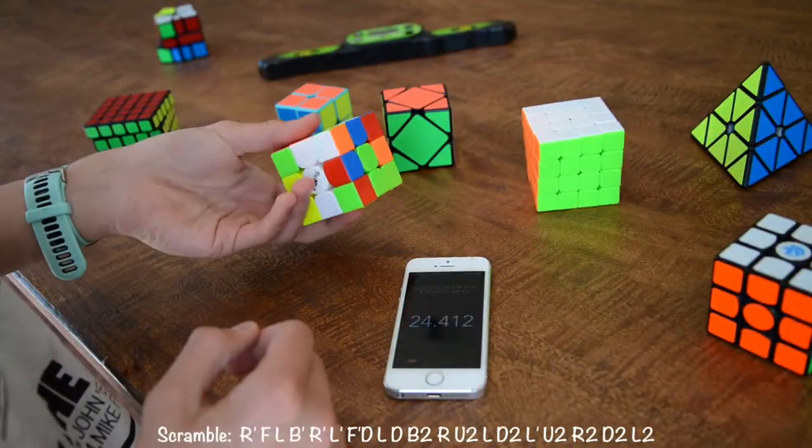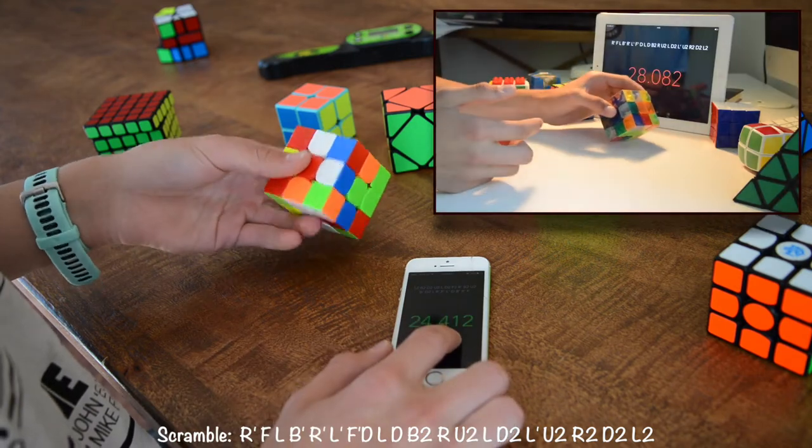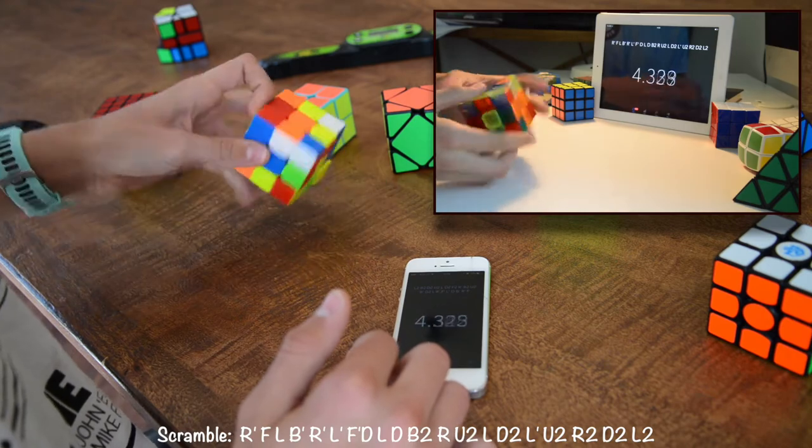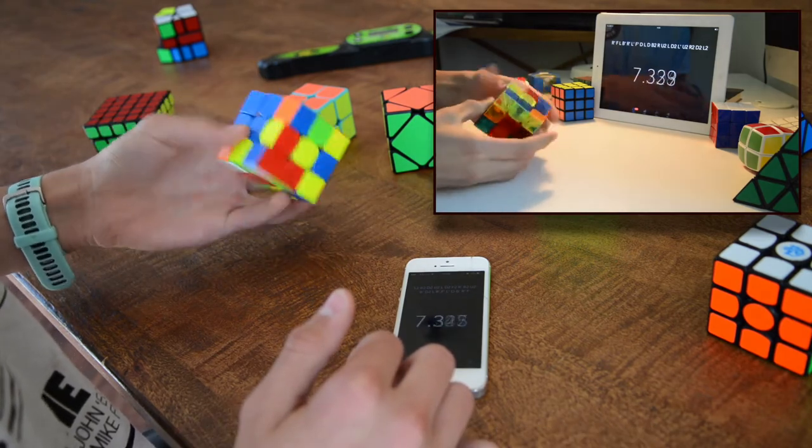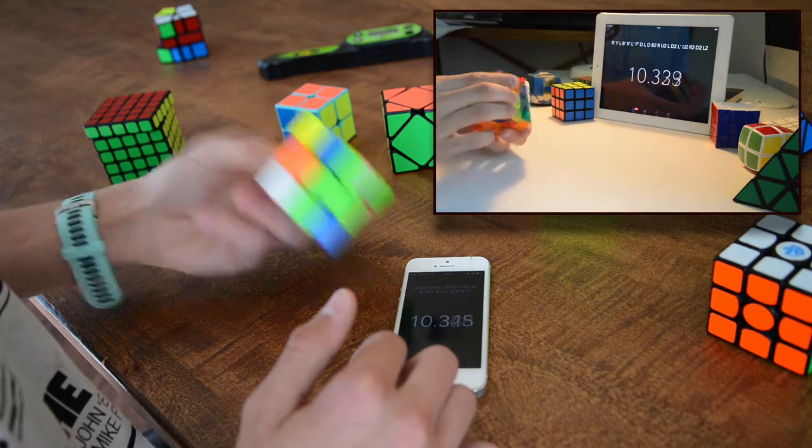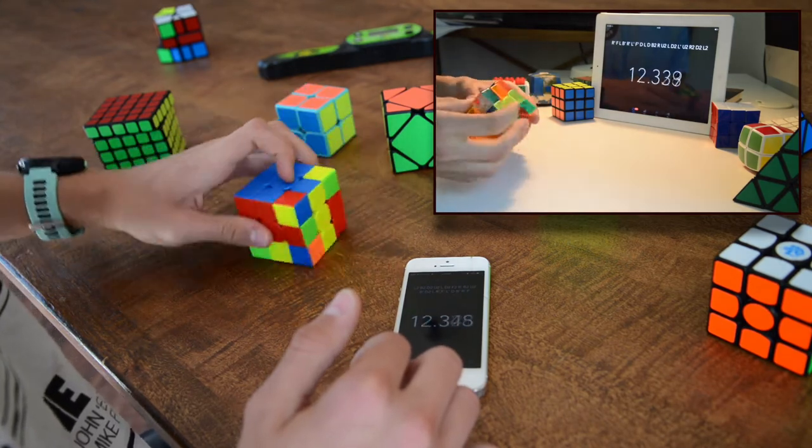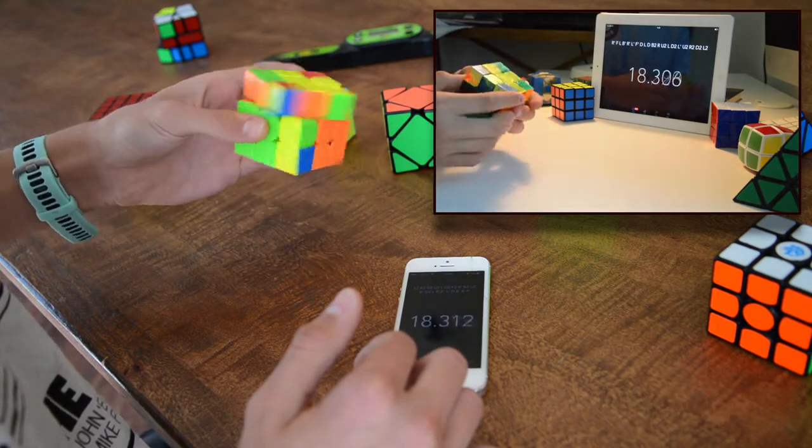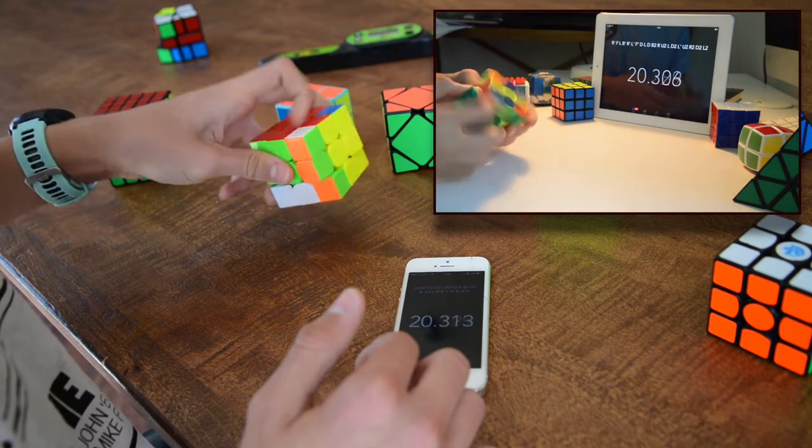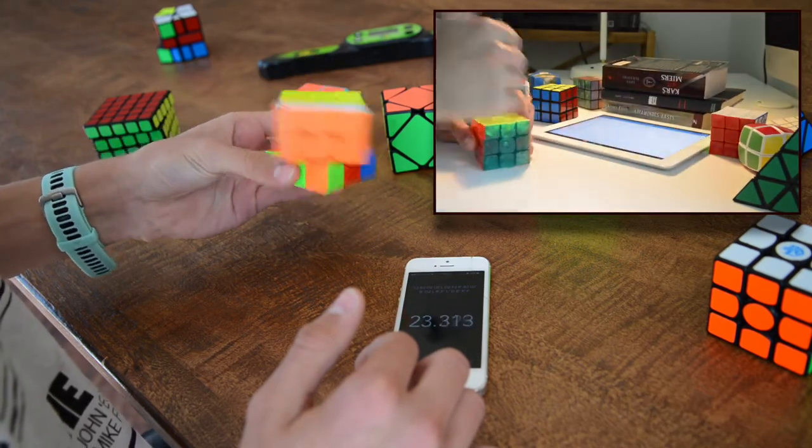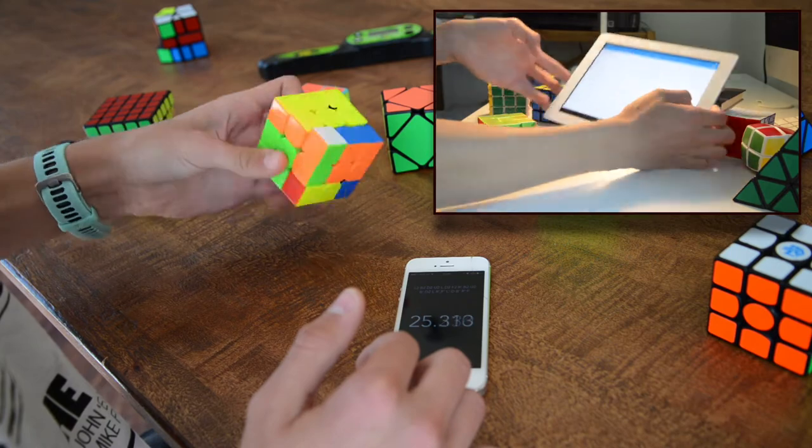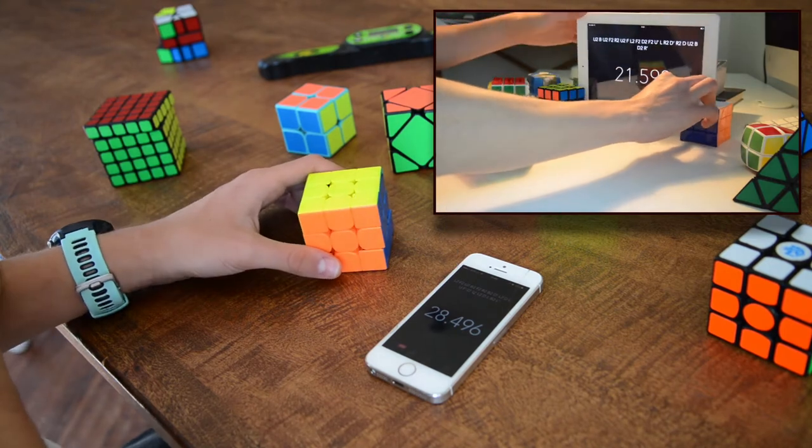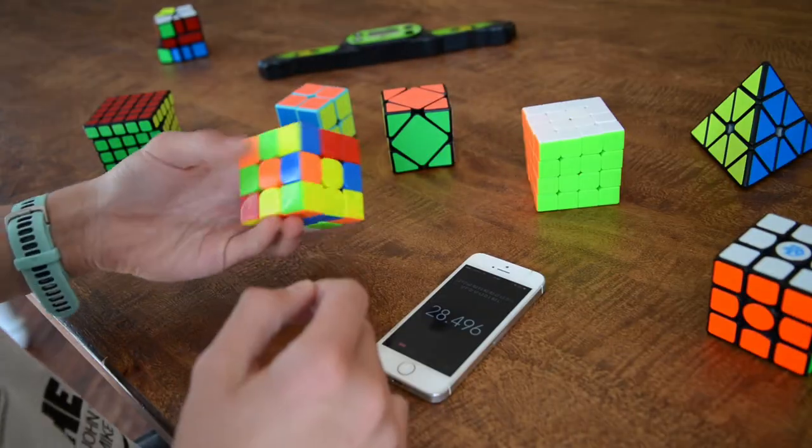This is the second scramble. 3, 2, 1, let's go. Oh, oh crap, messed up combination. No. Okay, I lost by 7 seconds. So now it's a tie.